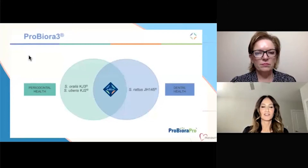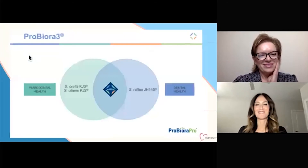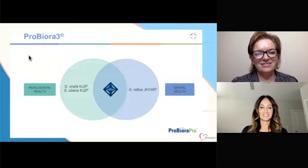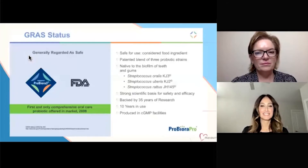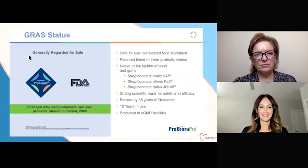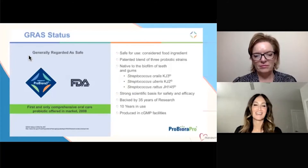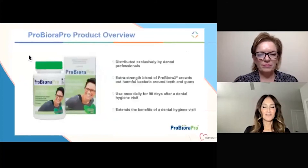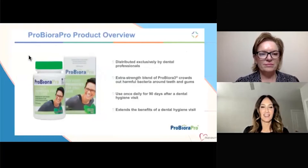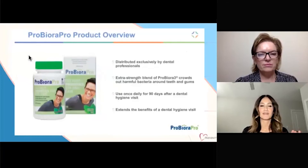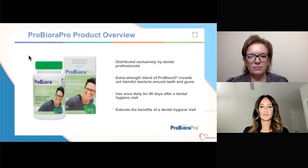These strains are very important to understand when talking about periodontal disease. We want to look for S. oralis or KJ3, and uberus for periodontal disease, and radius when talking about dental decay or cavities. This product is safe — it grows a healthy biofilm, and it's backed by over 35 years of research and has been in use for over 10 years. You can look for Probite or ProBiora. It is only distributed through the dental professionals community, which can make it hard for patients to access. It comes in a 90-day treatment supply, so patients have enough product until their next periodontal maintenance appointment — which is a huge benefit to our success.